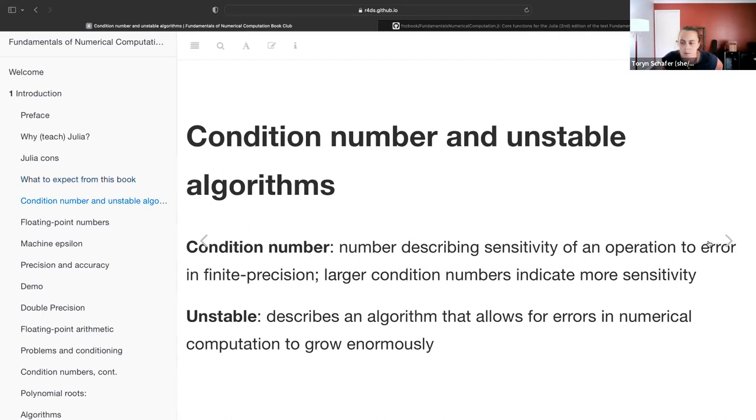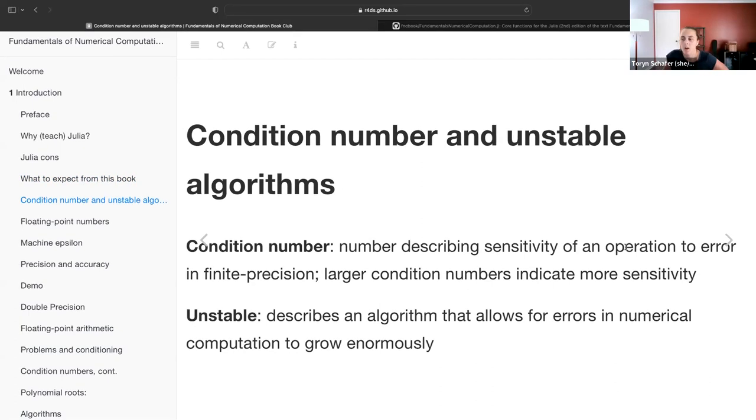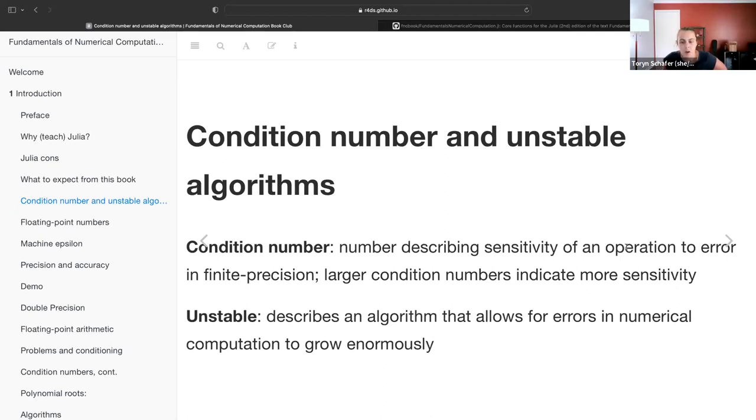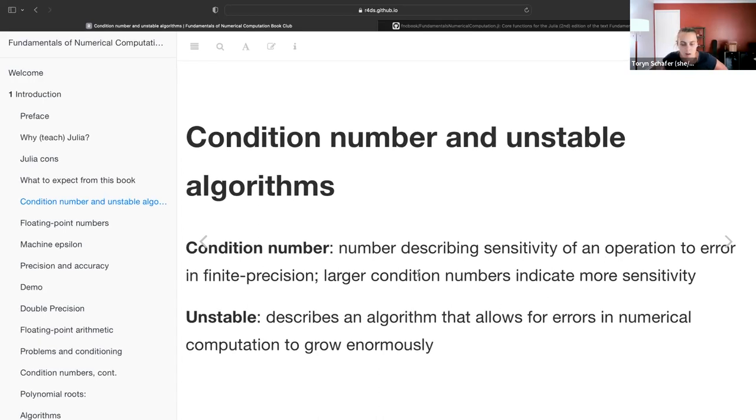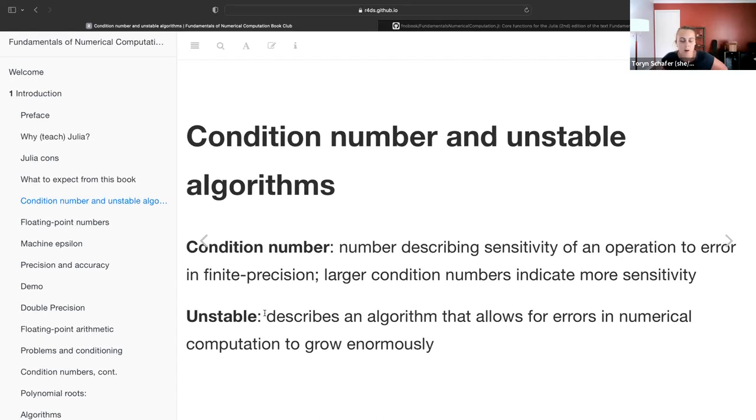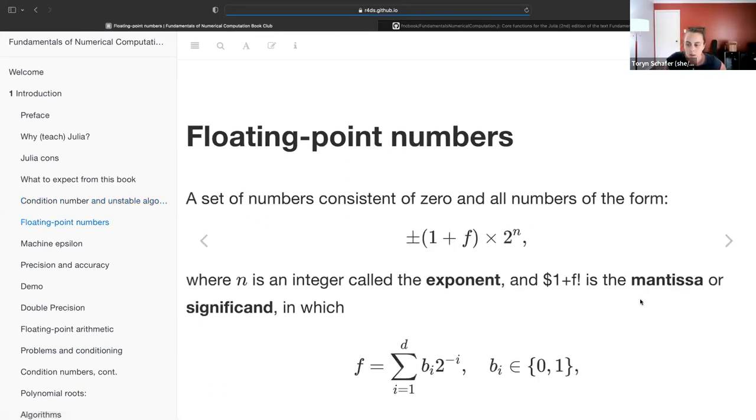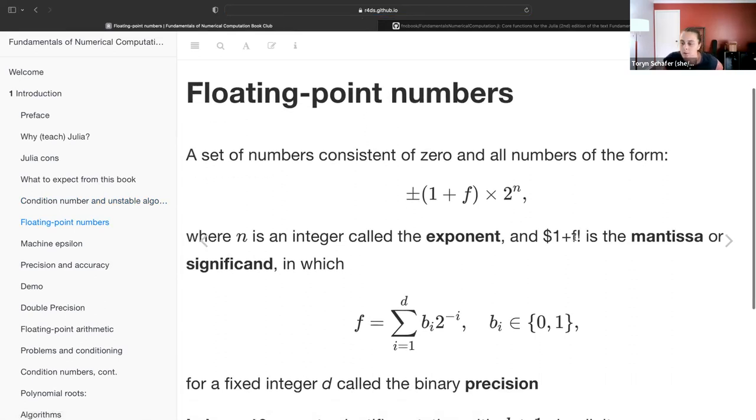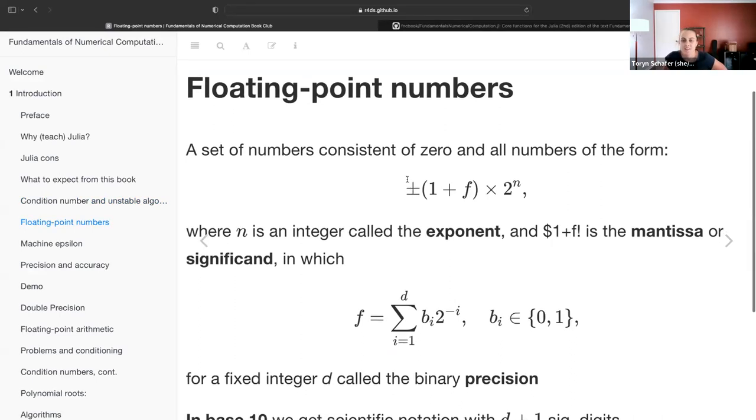Chapter one was a lot of definitions. They defined condition number, which is a quantity that describes the sensitivity of an operation to error in finite precision, where a larger condition number indicates more sensitivity. And they define this adjective for algorithm: an algorithm is unstable if it allows for errors in numerical computation to grow enormously.